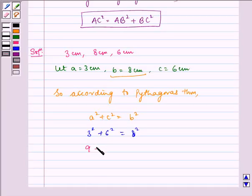That is, 9 plus 36 should equal 64, but we know 45 is not equal to 64.